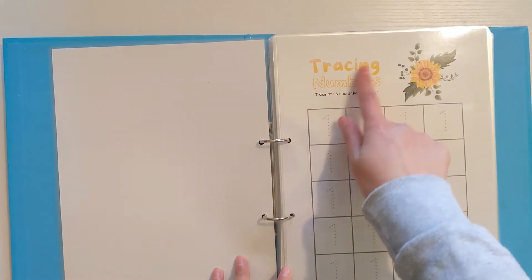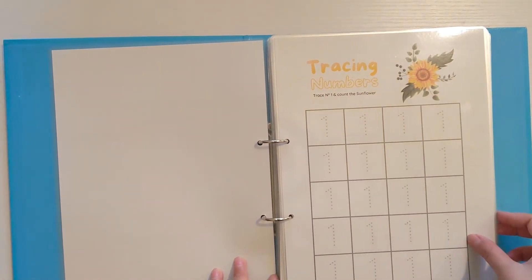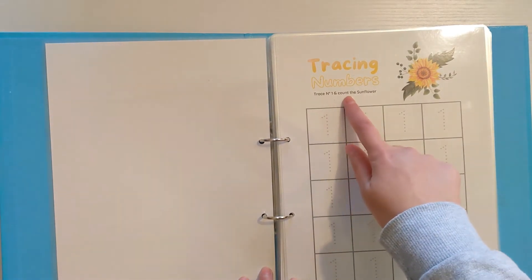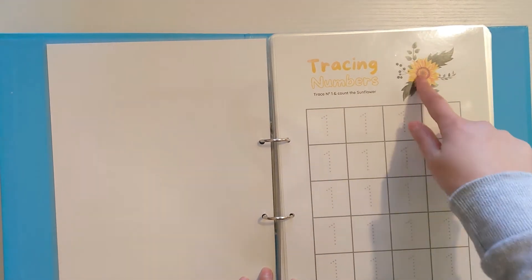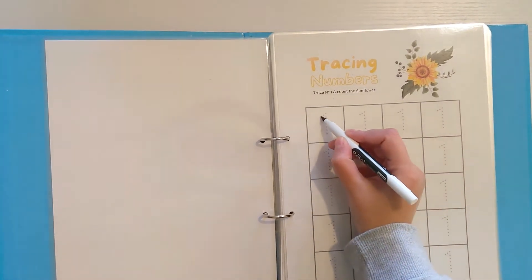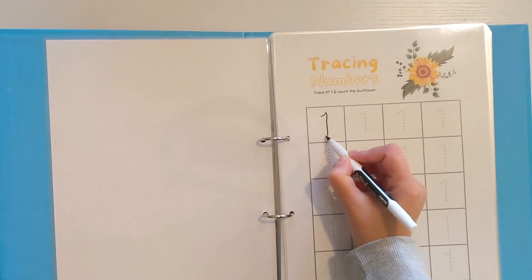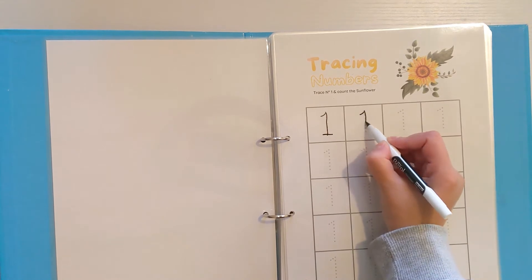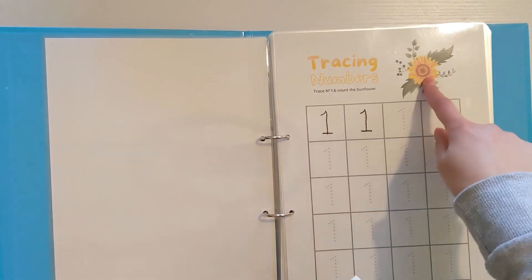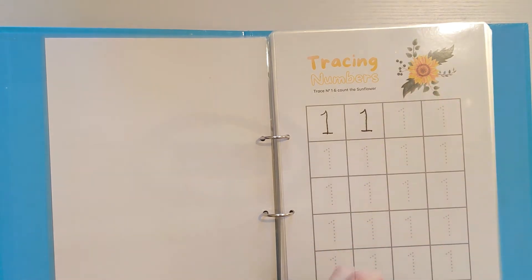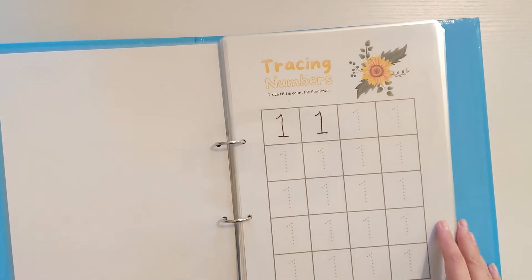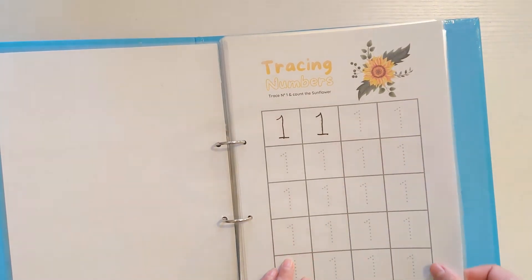I've started off with tracing numbers. These are a series of sunflower sheets. We've got trace number one and count the sunflower. So here's one sunflower. All we'll do is get a dry wipe pen and get her to practice doing number one on this sheet and then just counting one sunflower. That'll help them start off in a really nice, easy, child-friendly way to start joining the numbers.